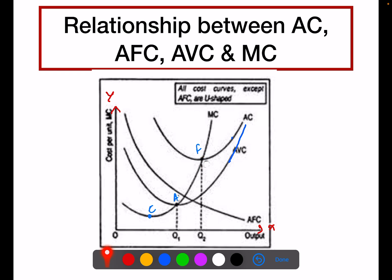When AC falls and AVC also falls, MC is less than both AC and AVC — MC lies below both curves. Similarly, when MC rises, AC and AVC are below the MC curve, meaning MC is greater than both AC and AVC at that stage.